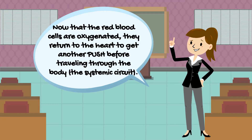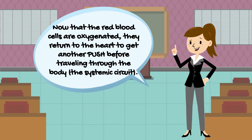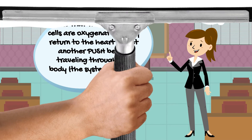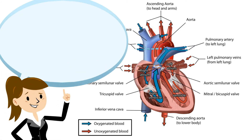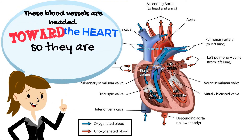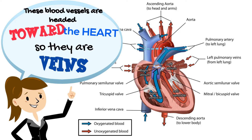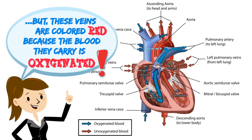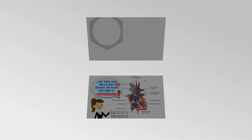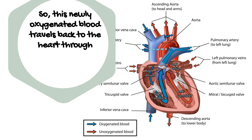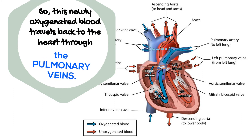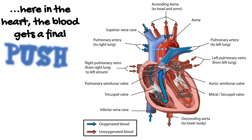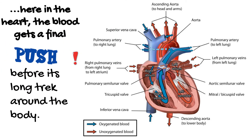Now that the red blood cells are oxygenated, they return to the heart to get another push before traveling through the body in the systemic circuit. These blood vessels are headed toward the heart, so they are veins, but they are colored red because the blood they carry is oxygenated. This newly oxygenated blood travels back to the heart through the pulmonary veins, where the blood gets a final push before its long trek around the body.